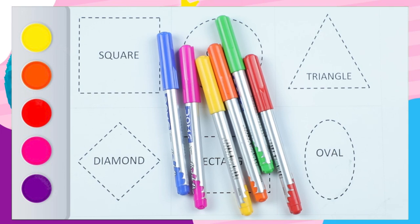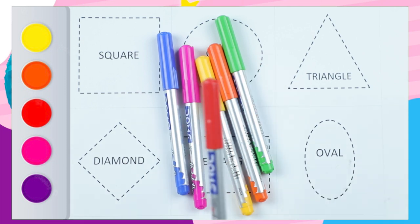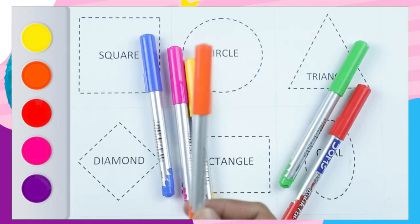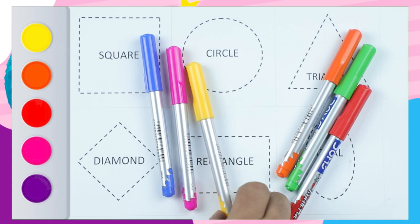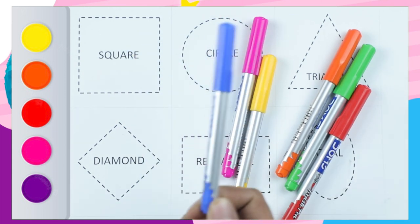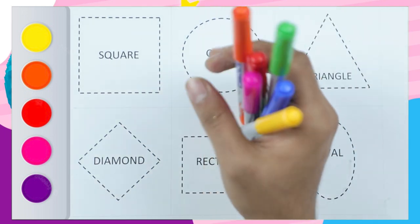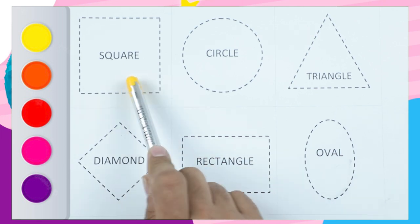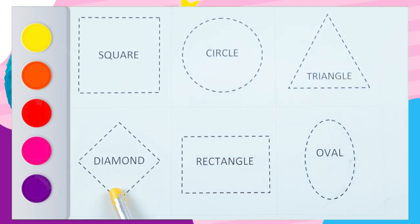Hello friends, how are you? Today we learn shapes with some colors: red color, green color, orange color, yellow color, pink color, blue color. Which shape is this? This is square, circle, triangle, diamond, rectangle, and oval. So let's draw!